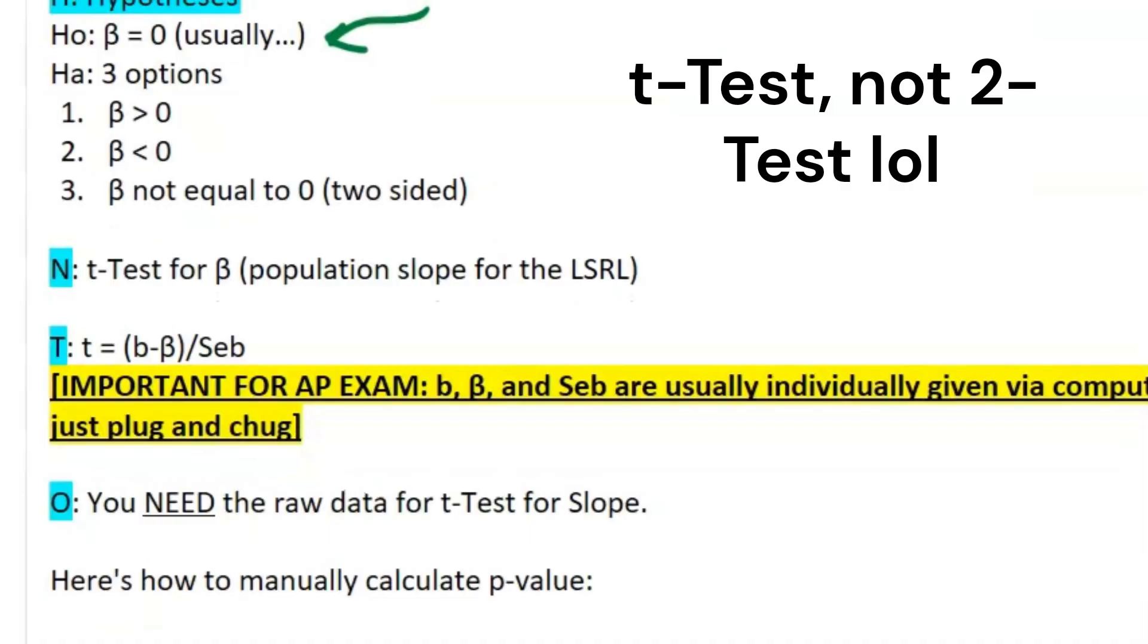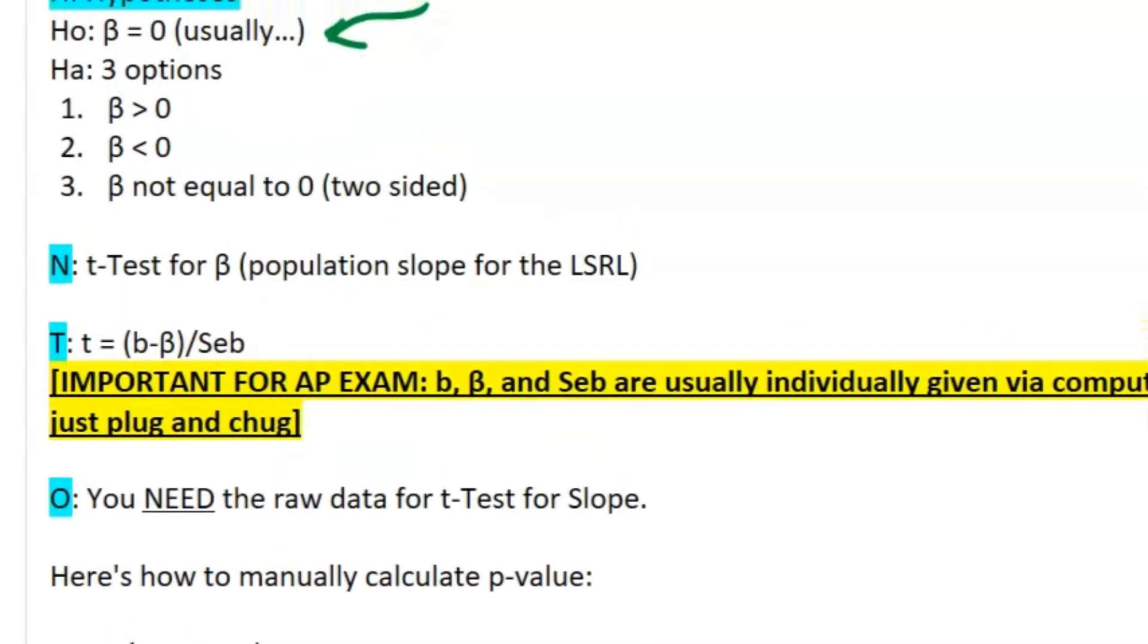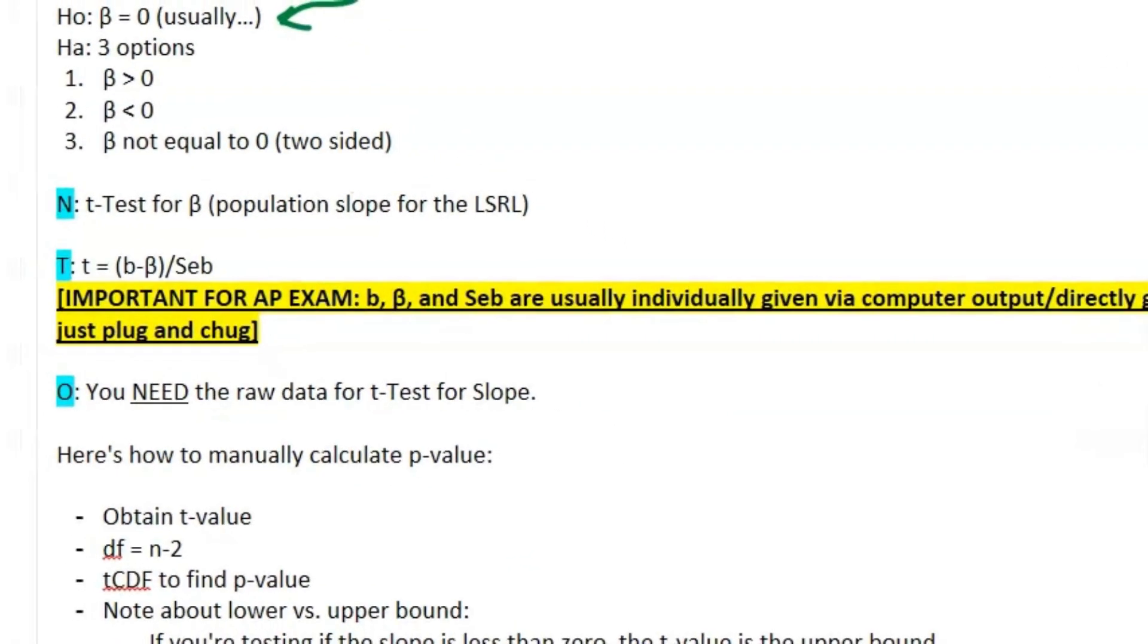Name of this is t-test for the population slope for the least squares regression line. And then for your test statistic, it is your estimated slope from the sample minus your population slope.